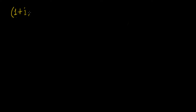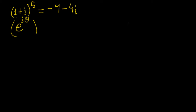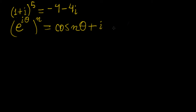In the last video we introduced De Moivre's theorem and talked about how it can be applied to finding powers of complex numbers. We found that this was equal to minus 4 minus 4i, which is interesting because by application of De Moivre's theorem you can find the powers of any complex number as long as you represent it in polar form first. In this video we're going to apply De Moivre's theorem to finding identities for trigonometric functions.